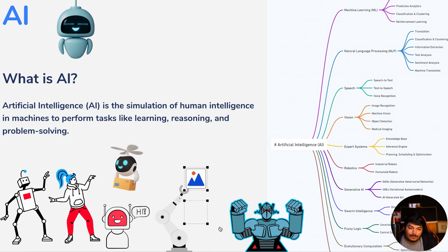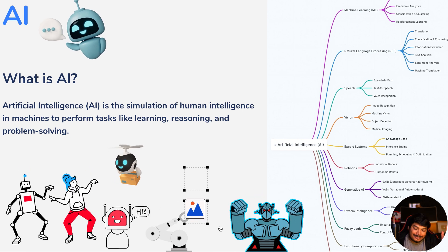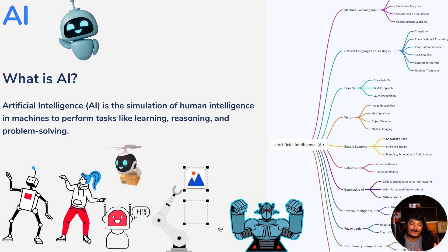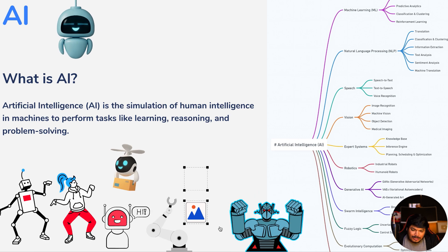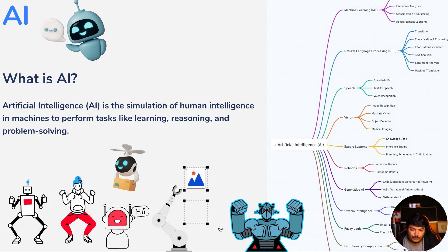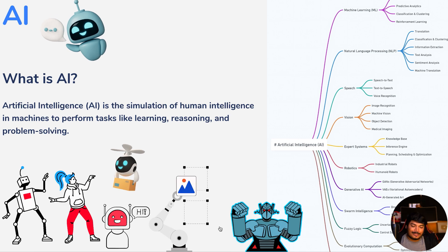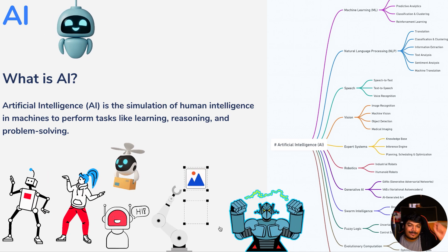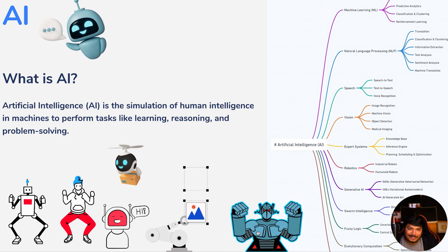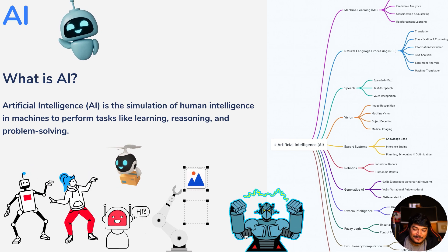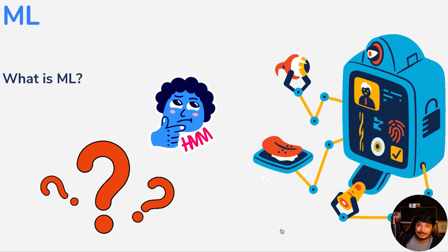If any machine or software can mimic human intelligence, I will call that AI or artificial intelligence. Now the question is how AI is doing all that — the answer is the ML part, machine learning. And of course we are doing MLOps for that particular reasoning. So now let's learn about what exactly is ML.